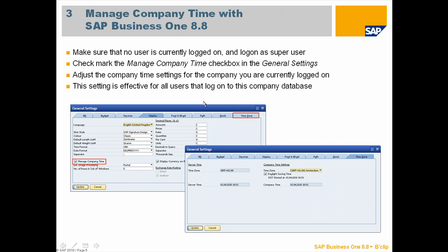I want to show you how you can make this happen with 8.8. First of all, make sure that nobody is currently logged on to this company database, then log on as a super user. Go to General Settings and on the Display tab you will see a new checkbox called Manage Company Time. If you check this checkbox, a new tab folder called Time Zone appears.